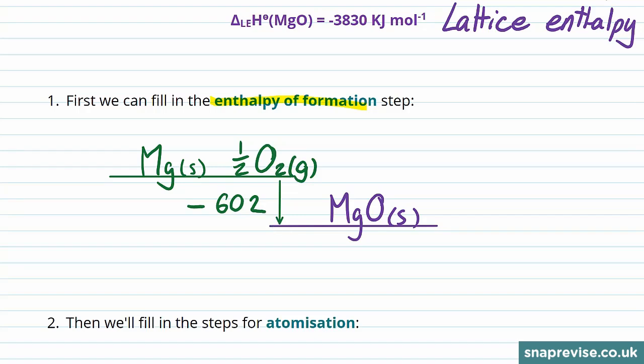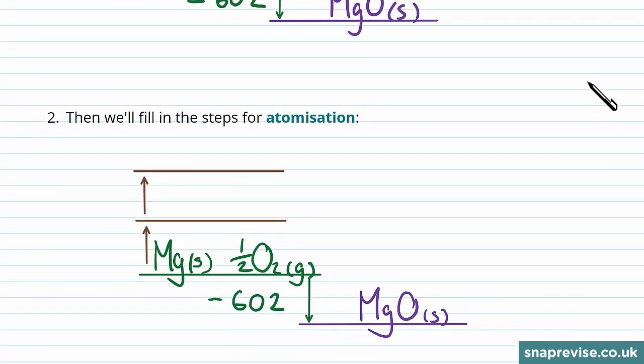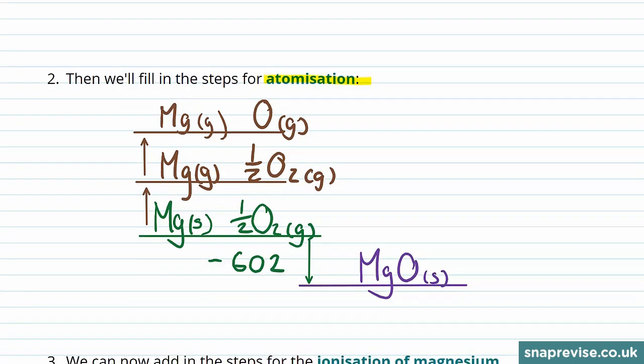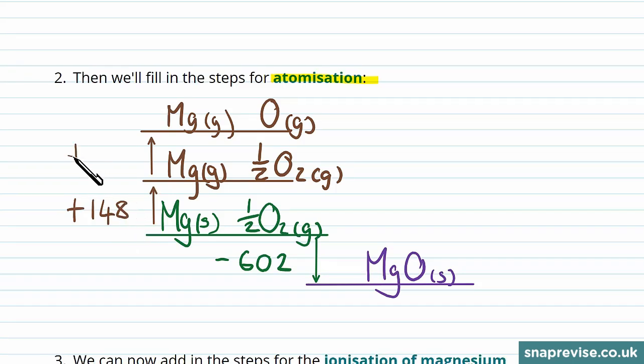So the next step, as you should be getting used to now in a Born-Haber cycle, is atomization. So one by one on the rungs we turn each element into a monatomic gaseous atom. So there's the magnesium, and we leave oxygen as it was on the rung below. And then in the next step we form the oxygen into the monatomic mole that we want. Now we're going up in energy, the first step is 148 kilojoules per mole, and the second step is plus 249 kilojoules per mole.